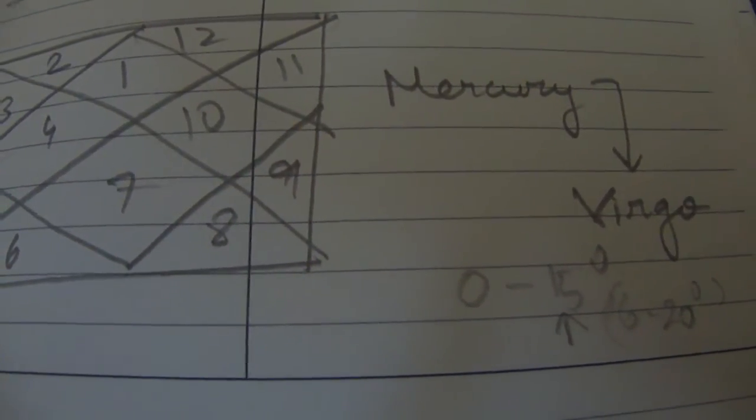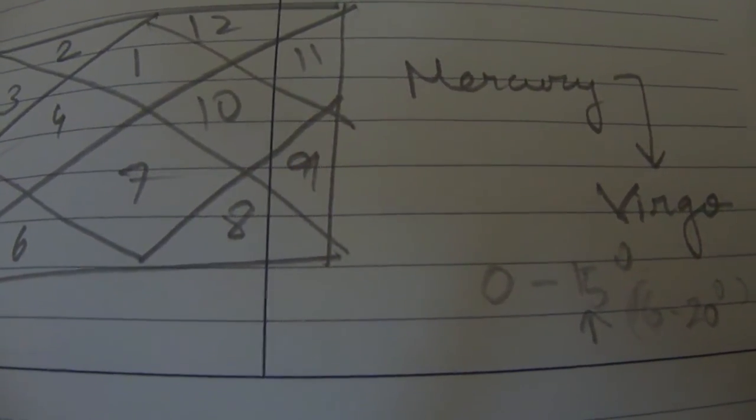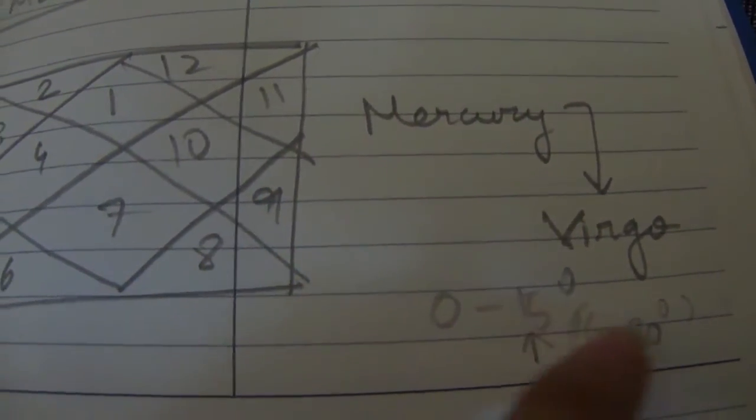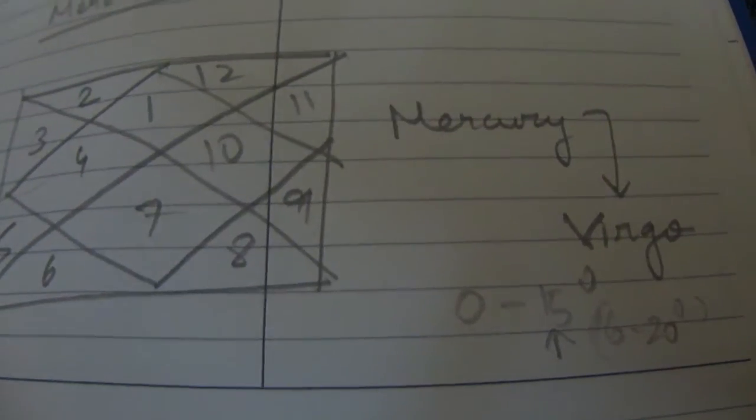Now Mercury gets exalted in the sign of Virgo and also it gets its maximum exaltation at 15 degrees. It gets into Mulder Gona sign from 16 to 20 degrees.